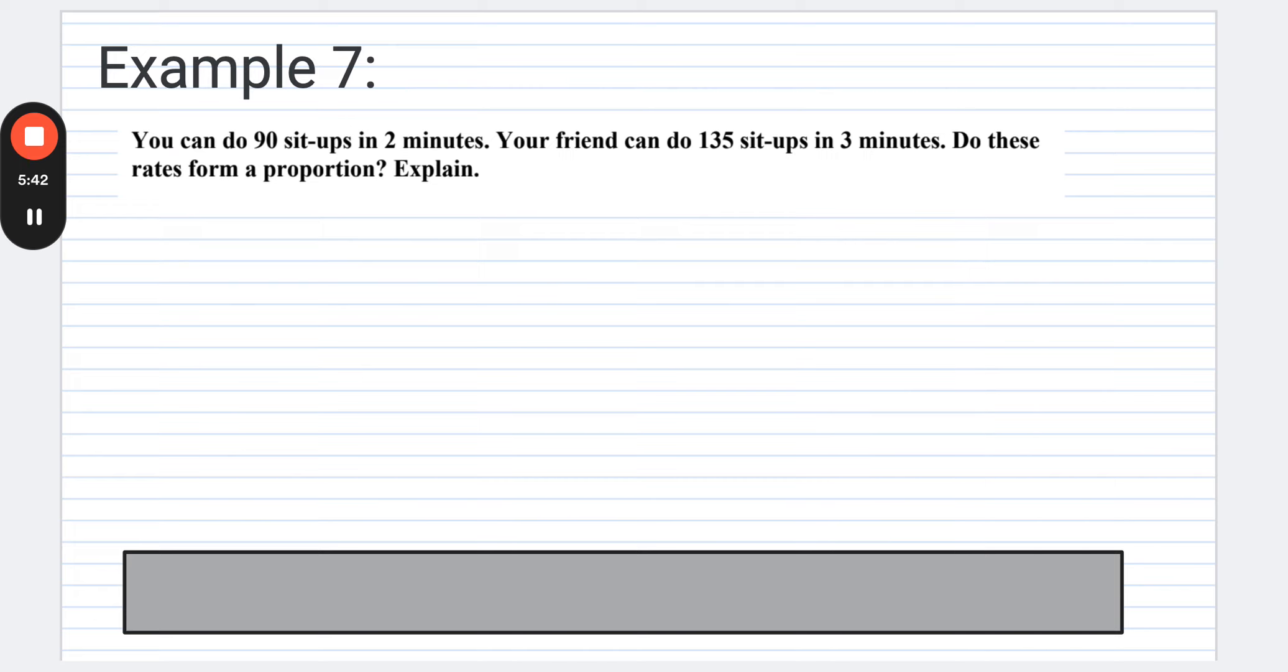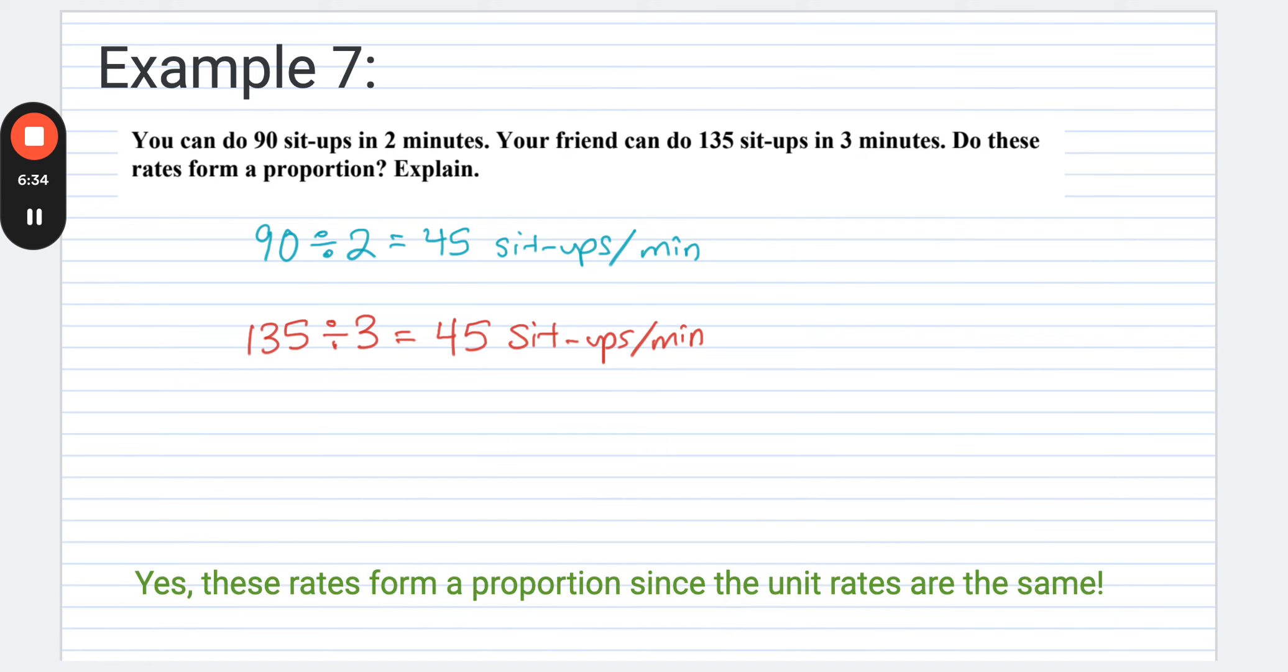All right. Our next example is a story problem and it says you can do 90 sit-ups in two minutes. Your friend can do 135 sit-ups in three minutes. Do these rates form a proportion? So we'll go ahead and use a unit rate for this one. So for you, you can do 90 in two minutes. So we're going to do 90 divided by two to figure out that you can do 45 sit-ups per minute. Impressive. Your friend can do 135 sit-ups in three minutes. So we're going to do the same kind of idea, except we'll do, again, different numbers, 135 divided by three. And so again, if we go through the math here, we would say three goes into 13. That would end up being four times. But we're going to find that your friend can actually do the same. So because those unit rates are the same, that means this forms a proportion. So these do have a proportional relationship.